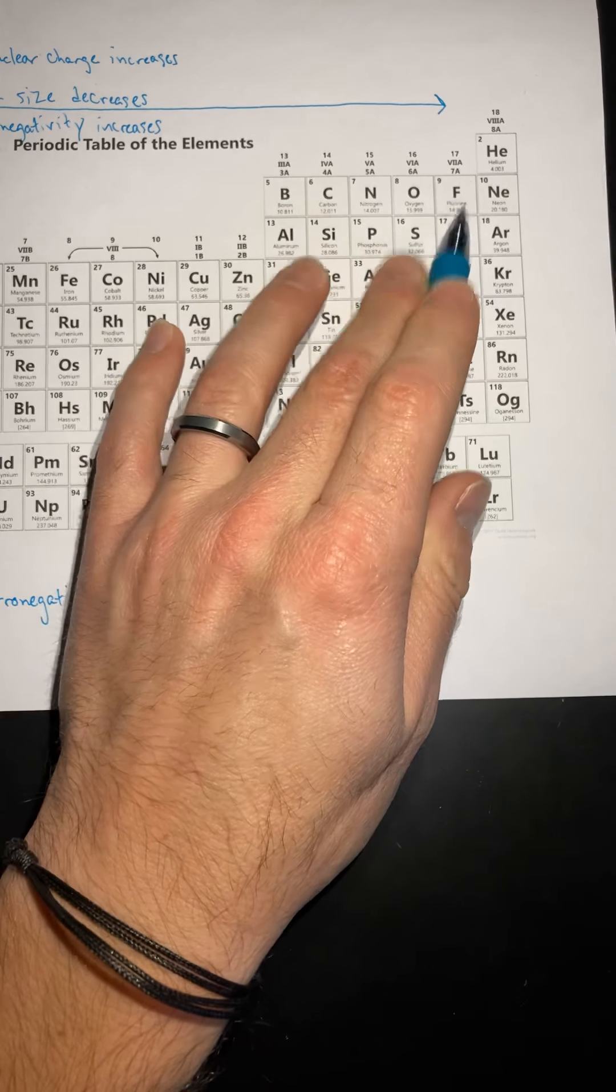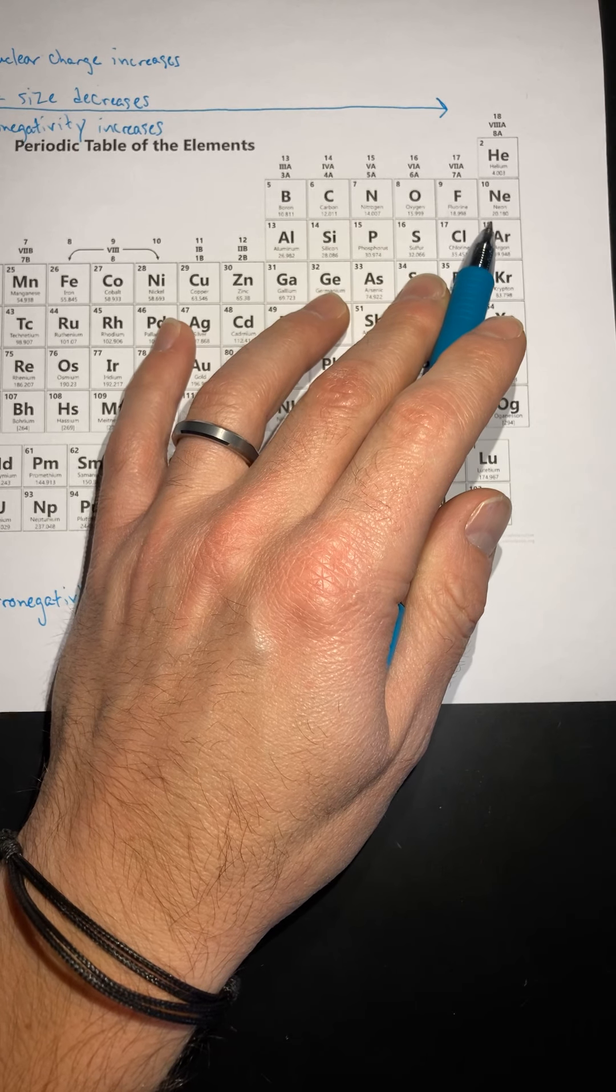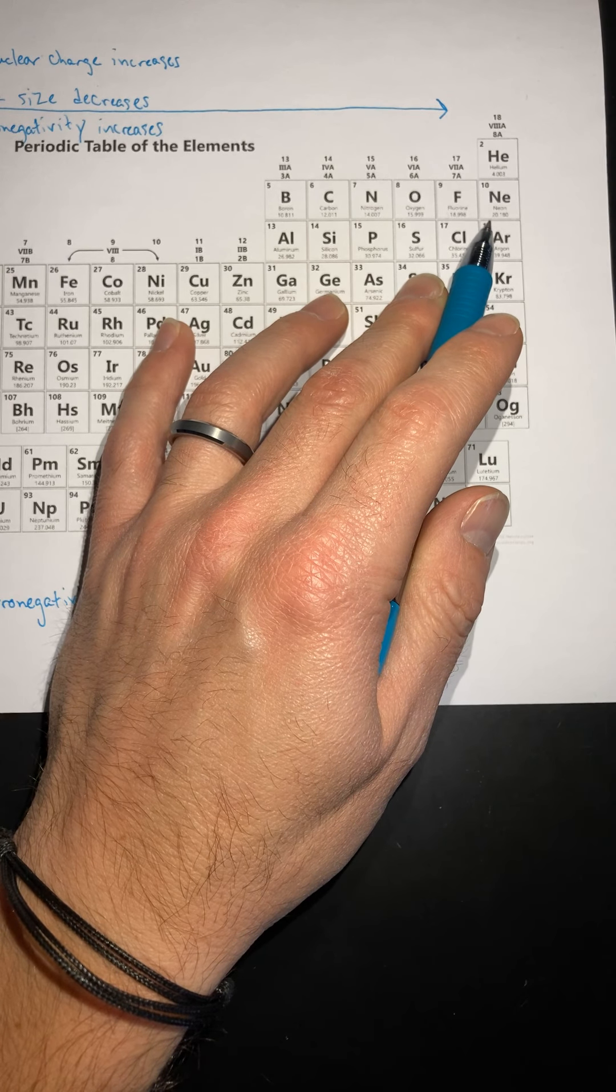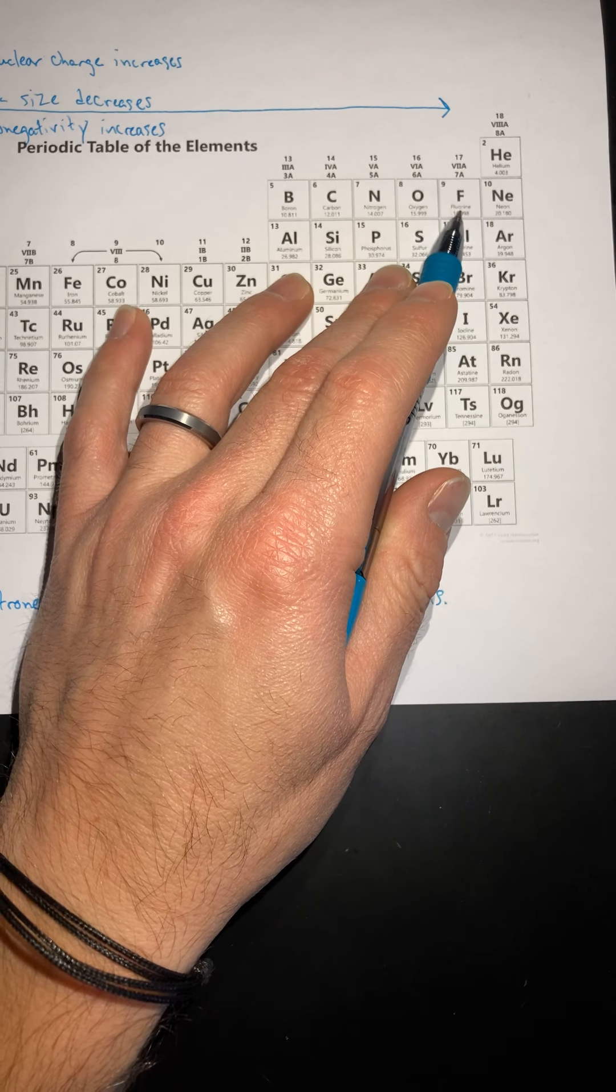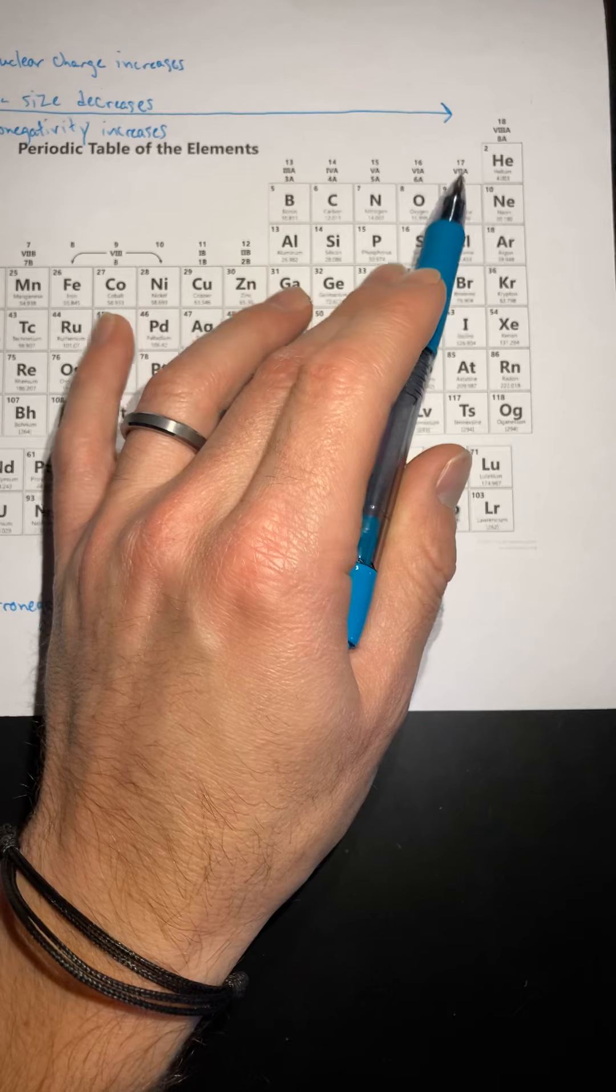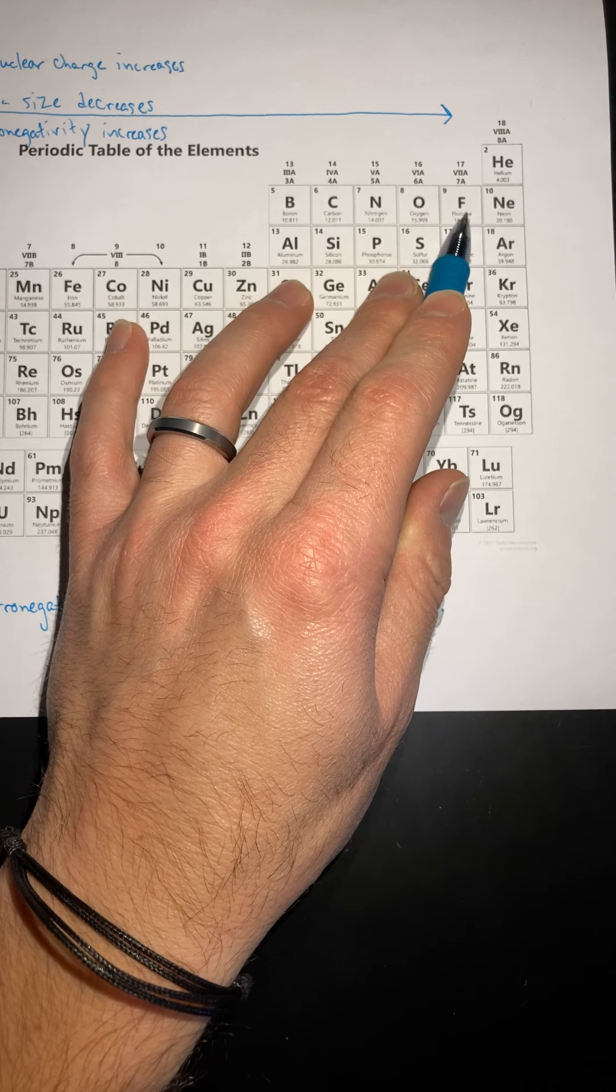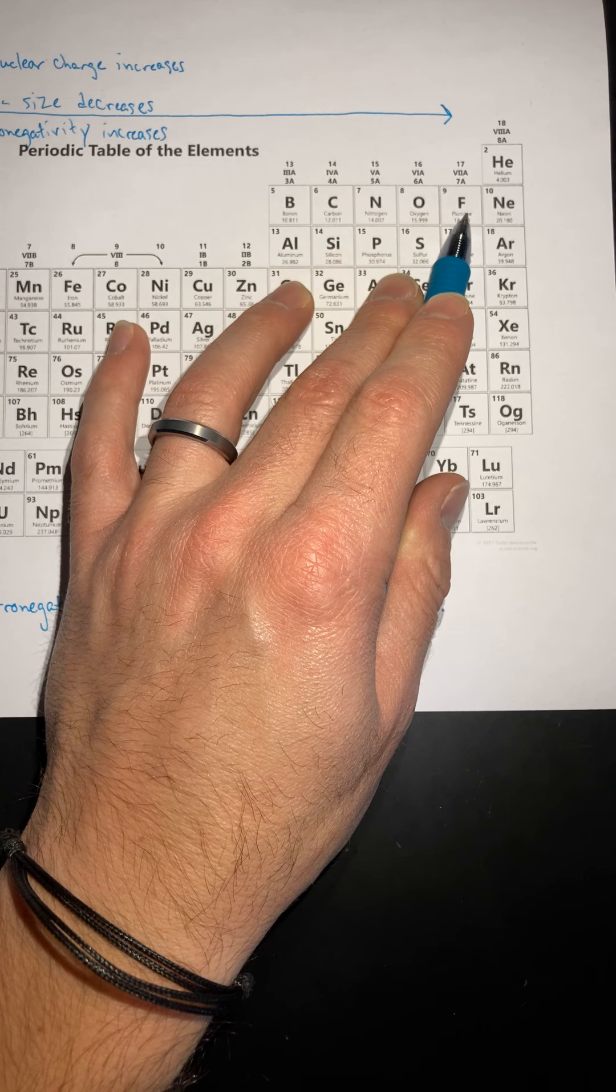Therefore, fluorine is actually the most electronegative element on the periodic table. This is the most electron-greedy element because it's the smallest, other than helium, technically. It's going to be very small, and it has a ton of nuclear charge. So it's going to pull electrons to itself more than any other atom on the periodic table.